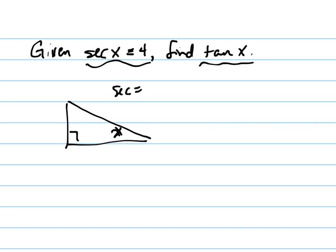And remember, secant is equal to 1 over cosine, which means, and cosine of x is the adjacent over hypotenuse, so the secant would be the hypotenuse over the adjacent. So the hypotenuse is 4, the adjacent is 1, because 4 is equal to 4 over 1.